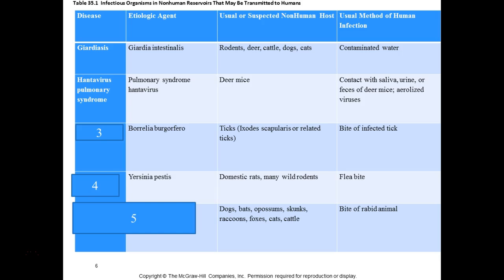Borrelia burgdorferi causes Lyme disease, transmitted by ticks. It's named after Lyme, Connecticut, where it was discovered. It's prevalent in New England and around the Great Lakes, and it is spreading — because the deer and their ticks carrying the bacteria are moving as we encroach upon their habitats.